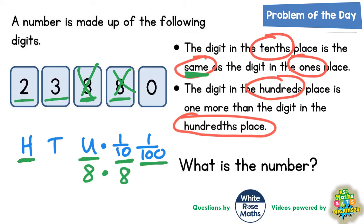So the digit in the hundreds place is one more. So the hundreds digit must be the three and that is one more than the digit in the hundredths place, which must be the two. So that's the three and the two gone.